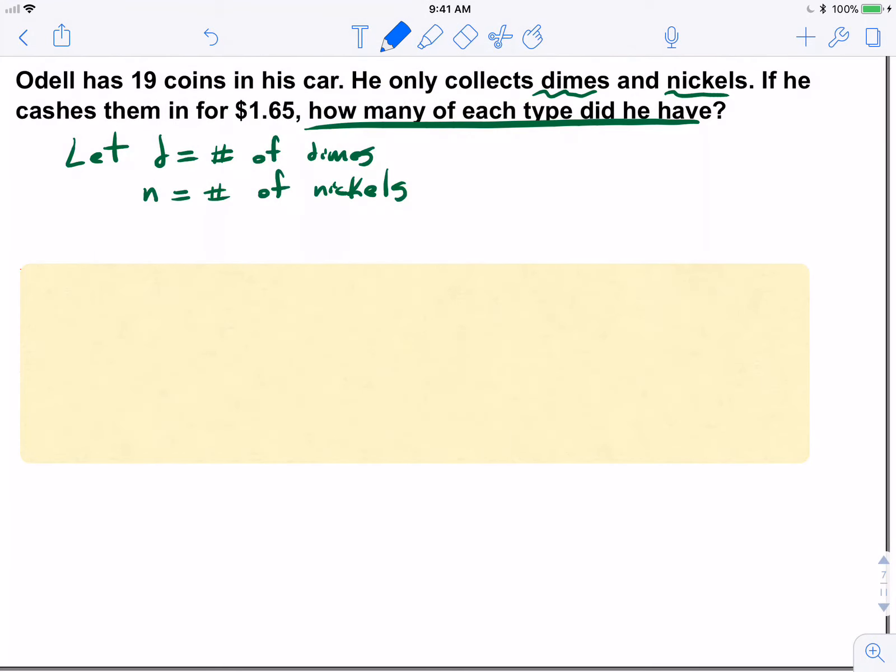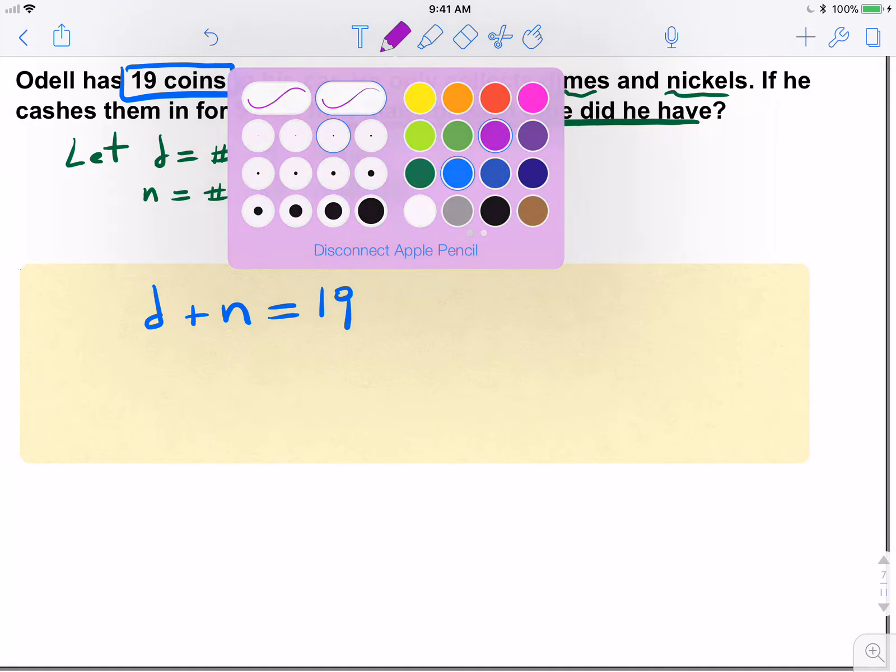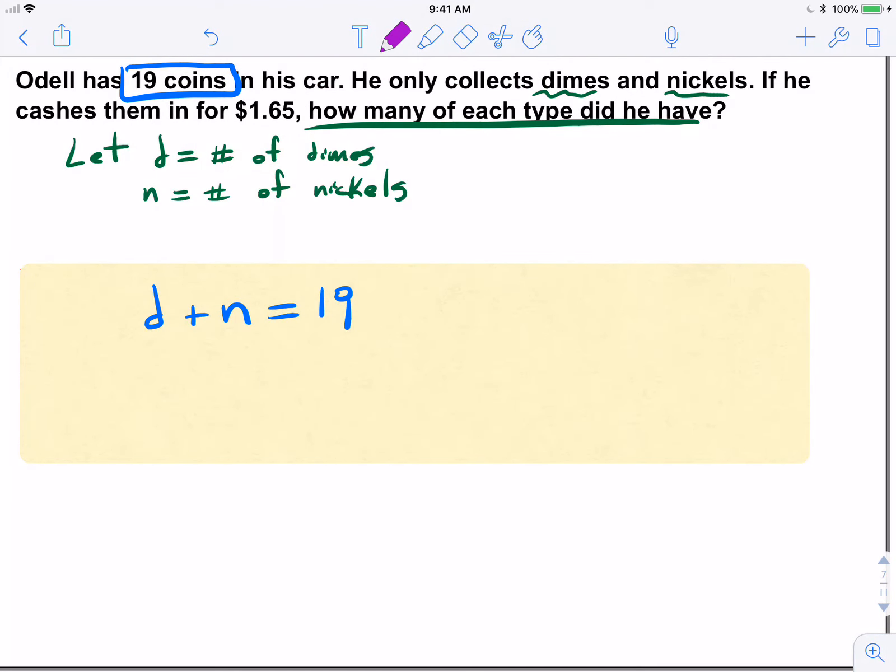And do we have enough information here? So I'm going to start with the number equation: 19 coins. So similar to that ticket example we just completed, if he only has dimes and nickels and he has 19 altogether, that must mean that d plus n should equal 19. That's my number equation, right? No coefficients, no dollar amounts, just straight up this plus this should equal 19.